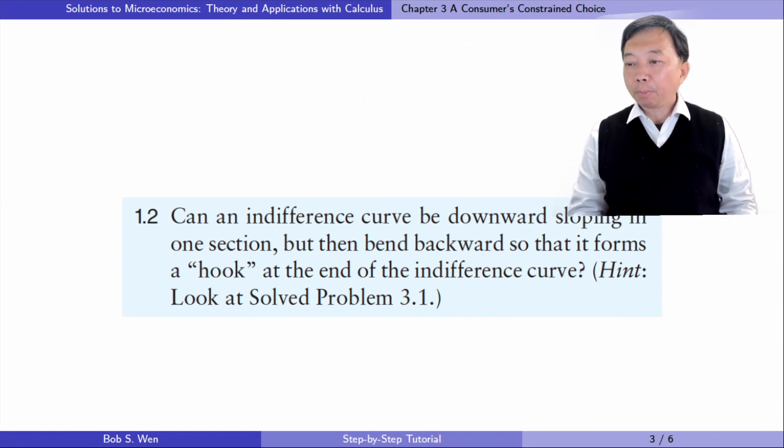Let's solve exercise 1.2. Can an indifference curve be downward sloping in one section and then bend backward to form a hook at the end of the indifference curve?